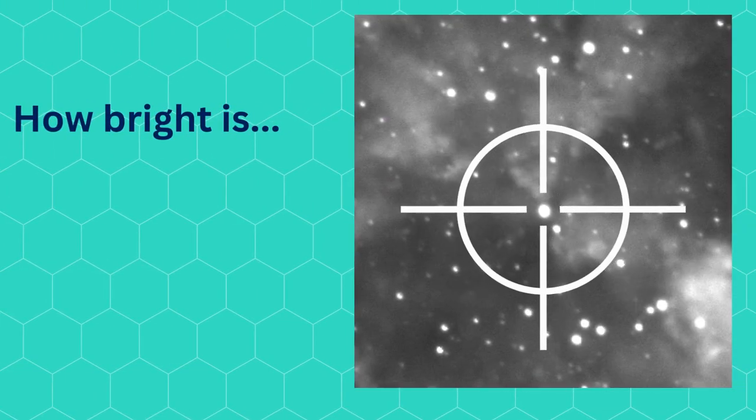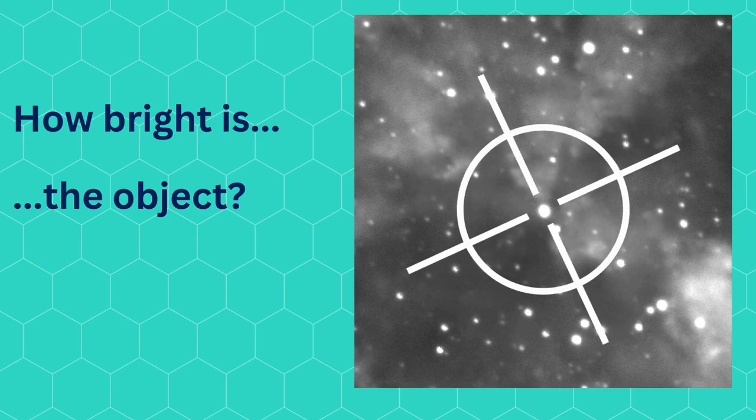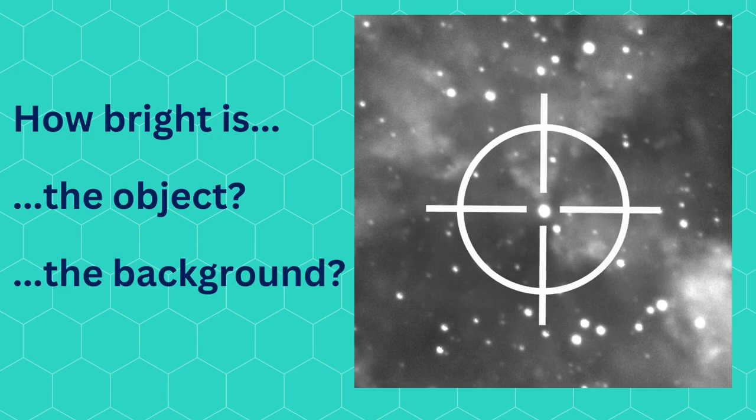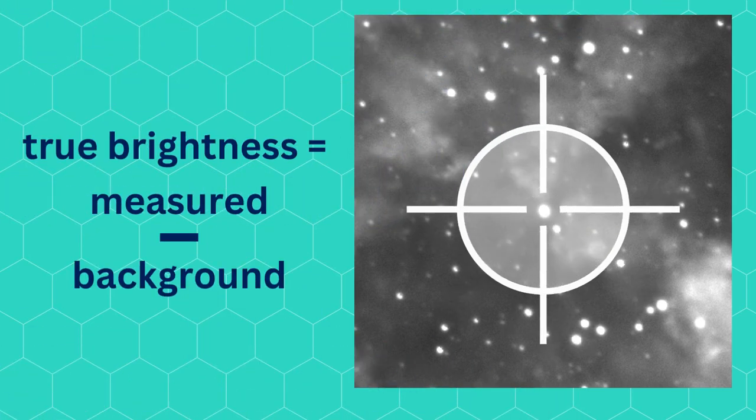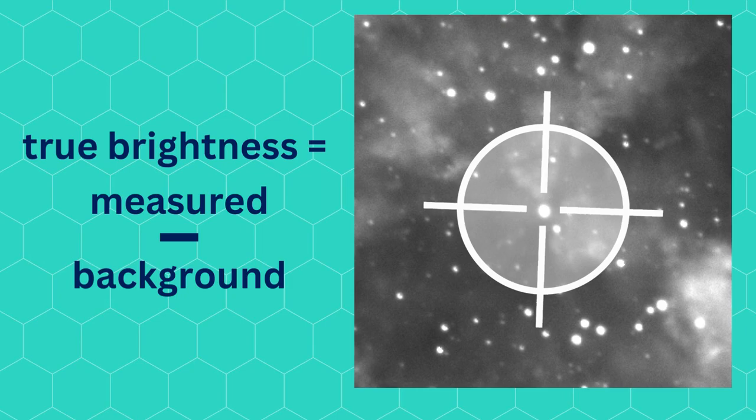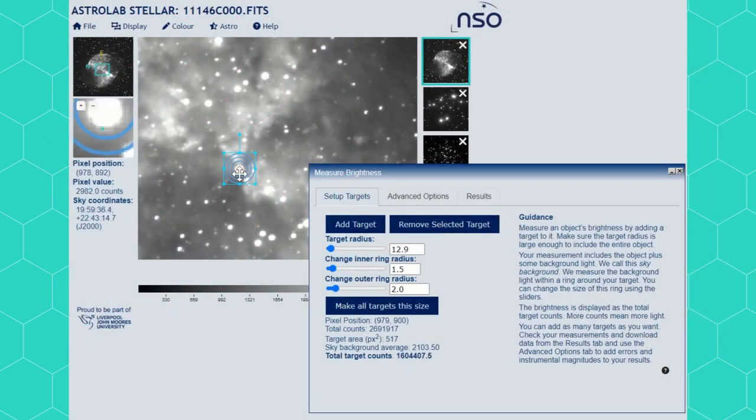When doing photometry it is important to note that you need to not only measure your object's brightness but the brightness of the sky around it. This is so that the background light in the image can be taken off your object, leaving the light from your object without this background pollution.